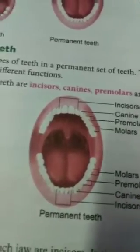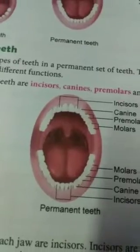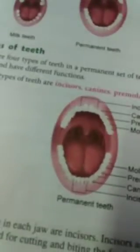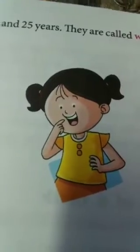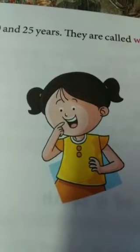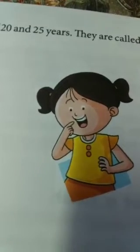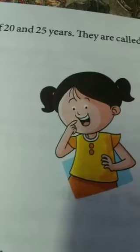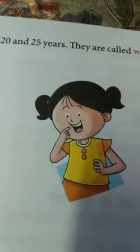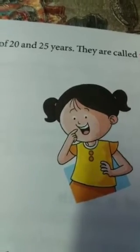First let us discuss about incisors. The 4 front teeth in each jaw are incisors. They are flat and have sharp edges, and they are used for cutting and biting the food.